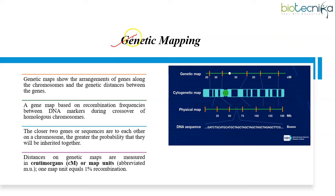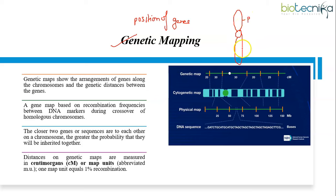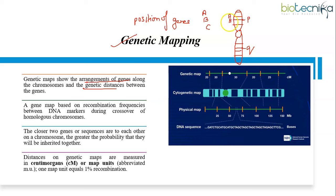Genetic mapping is a process used to determine the relative position of genes or other genetic markers on chromosomes. Chromosomes comprise a centromere region, a short arm called the p-arm, a long arm which is the q-arm, a telomeric region, and a sub-telomeric region, with several genes located at different positions. Genetic mapping involves creating a genetic map — a representation of the arrangement of genes or markers along the length of the chromosome — such as determining whether the order is A, B, C or B, C, A.